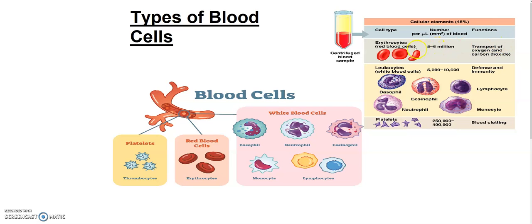The life span of RBC for students is approximately 4 months, which we can also call 120 days. And these RBCs are formed in the red bone marrow.